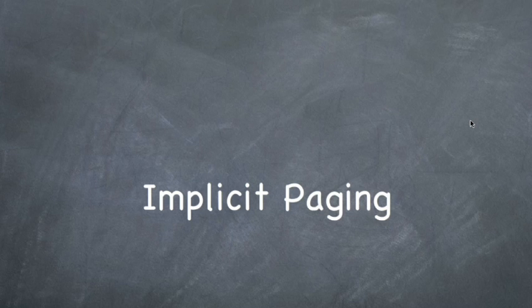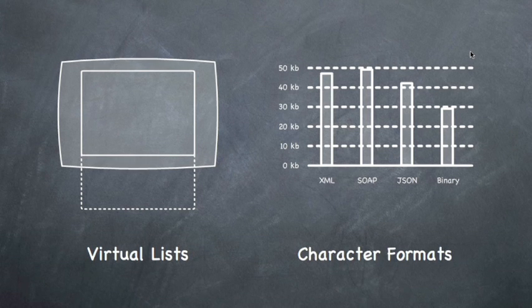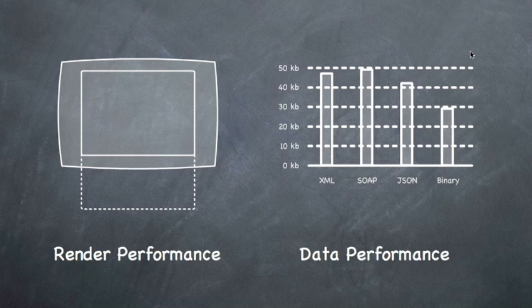What's implicit paging? Let's take a look at what we've talked about in some other sessions. We talked about things like virtual lists to optimize how much render time we're taking to deliver the list that the user is going to scroll through. We talked about character formats and getting that data across the wire to display in the first place. If you look at these in terms of overall architectural problems, we're really talking about rendering performance and data performance. Implicit paging is a continuation of these.